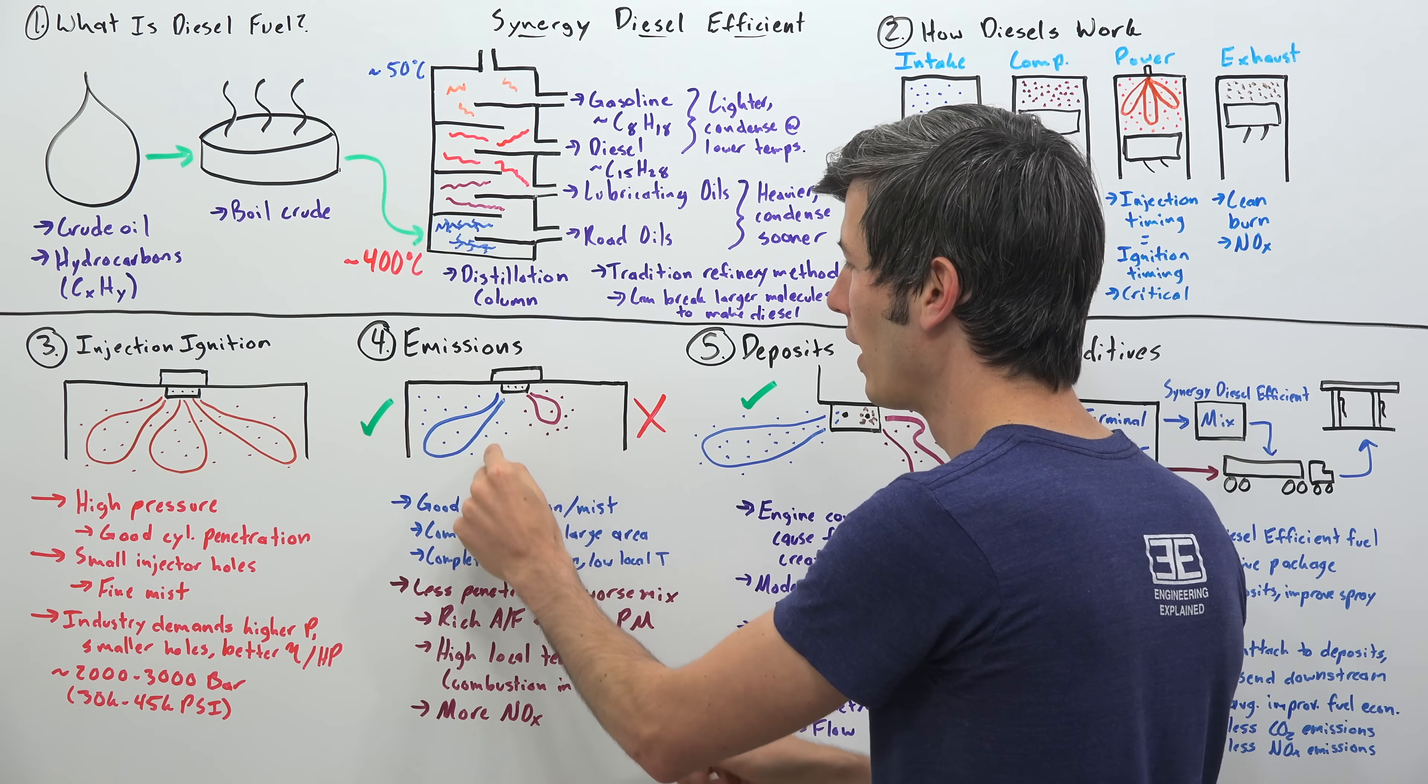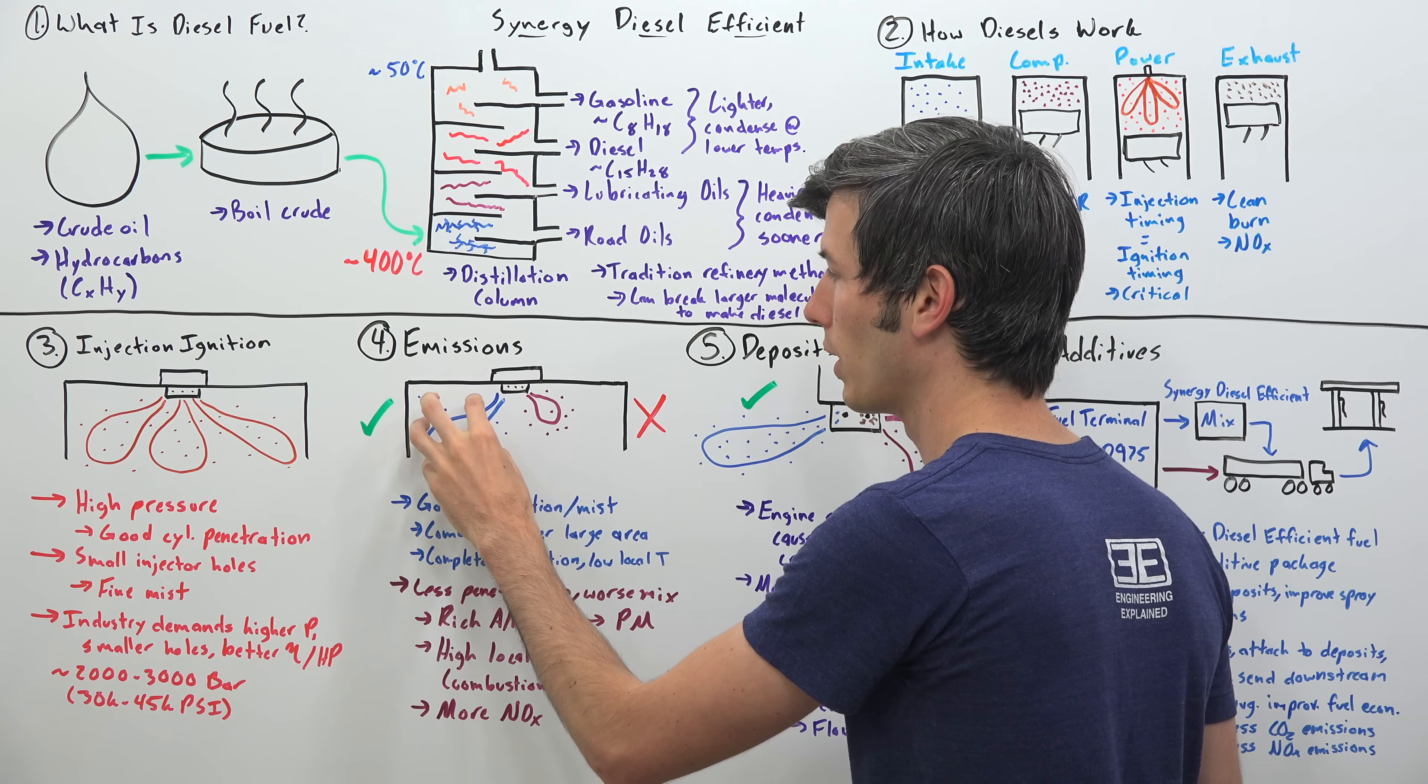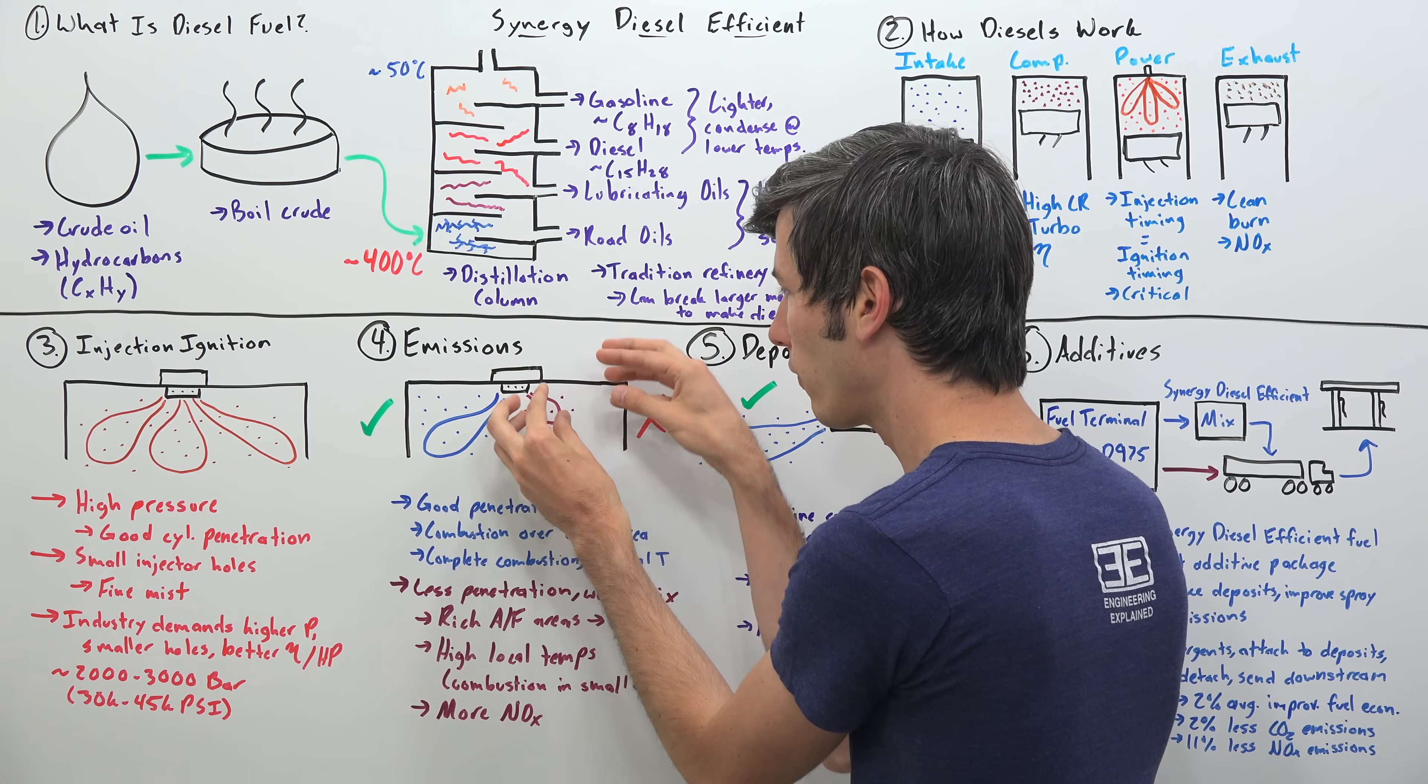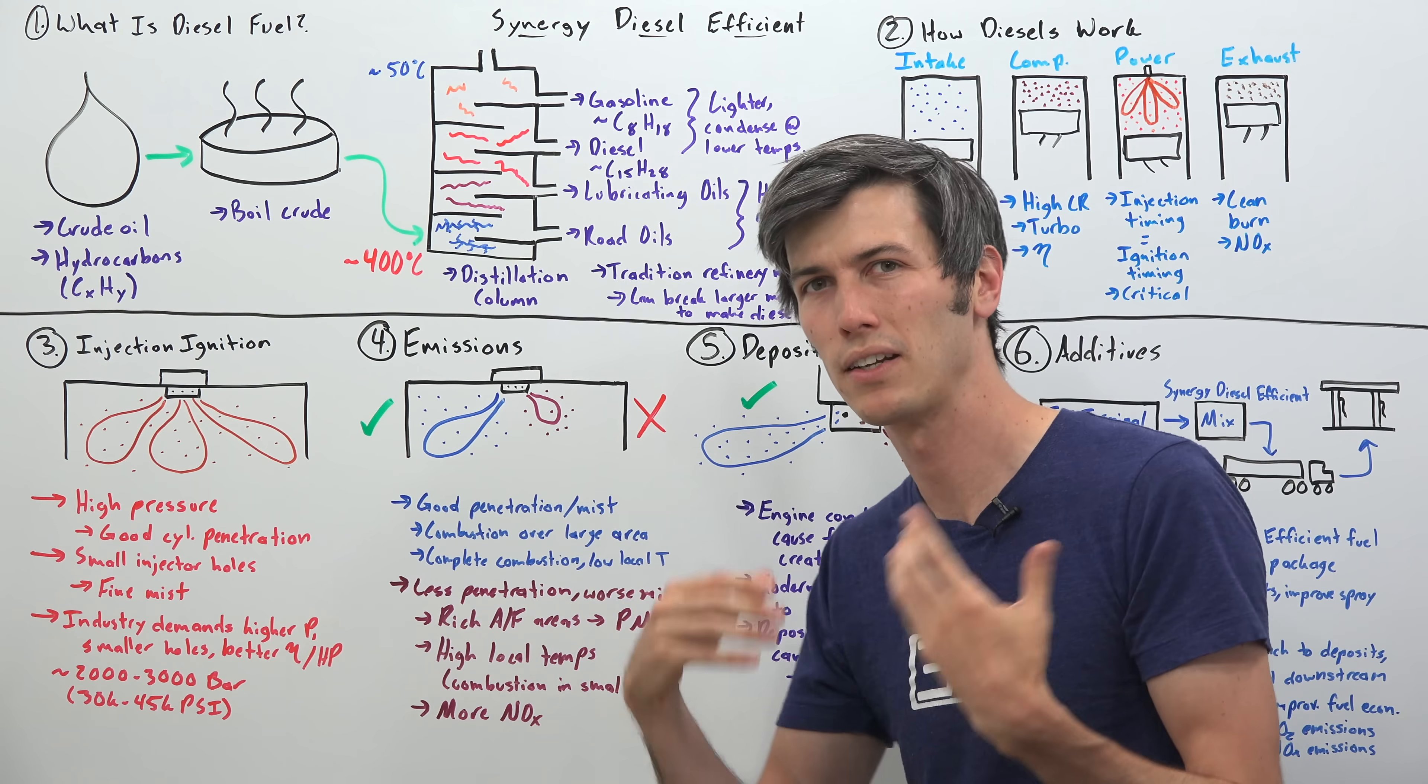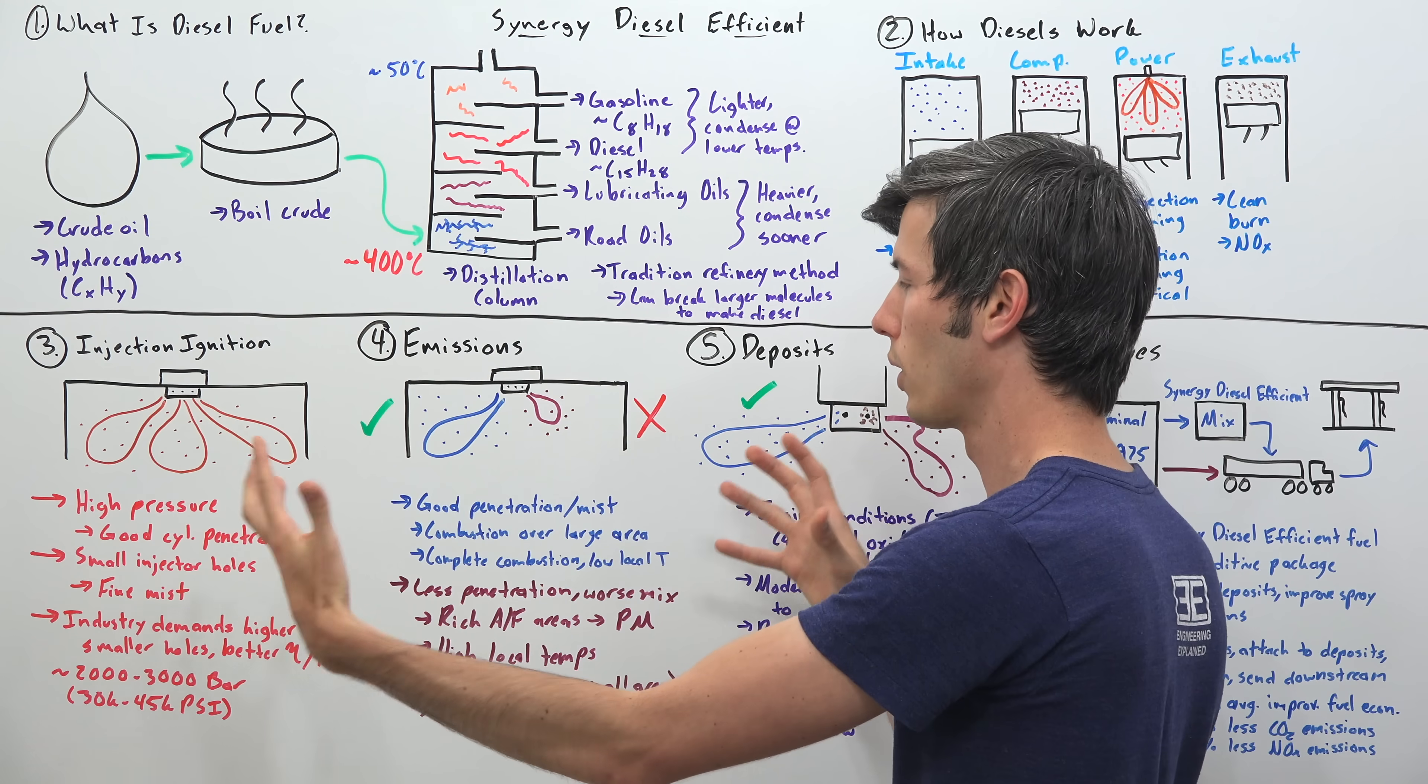But there are also emissions benefits to using a finer mist and using higher pressures. So if you kind of imagine, this is an extreme comparison here, one injecting out quite further, great cylinder penetration, really spread out the fine mist, versus a richer area right here. So if you think about burning all of this fuel in this area, or all of this fuel in this area, and you have the same quantity of fuel, because this fuel is spread out over a larger area, it's going to have lower local temperatures. All of this fuel is being burned in a much smaller area, so the overall temperature of that area is going to be higher. And because the temperature of that area is higher, more NOx emissions are going to form. NOx emissions are correlated with temperatures, so the higher you get your temperatures, then the more NOx emissions you have.